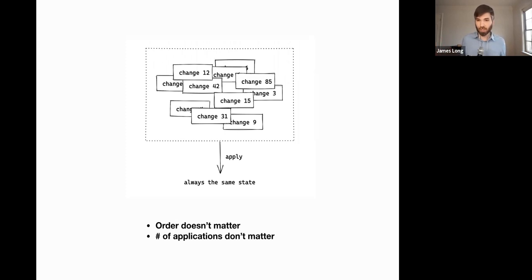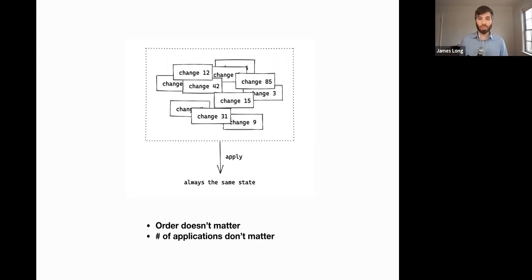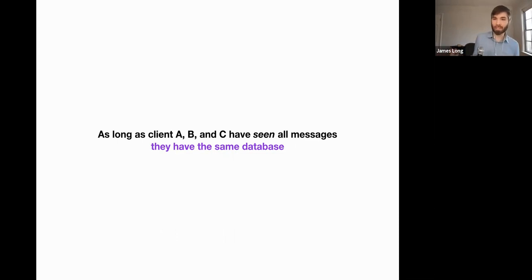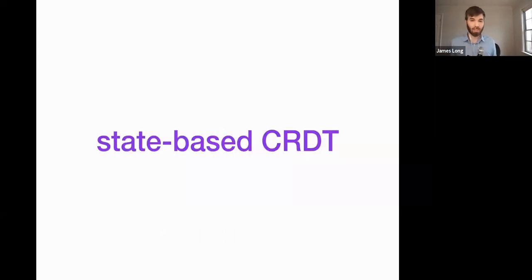The really interesting thing is that you can have just a bucket of these changes and apply them through the system — as long as everybody has seen the same messages, they will always get the same state. The order doesn't matter, and the number of applications of those messages doesn't matter: you can apply the same message over and over again. In the distributed world, this is a really powerful concept — this basically is a CRDT. As long as clients A, B, and C have seen all the messages, they have the same database.